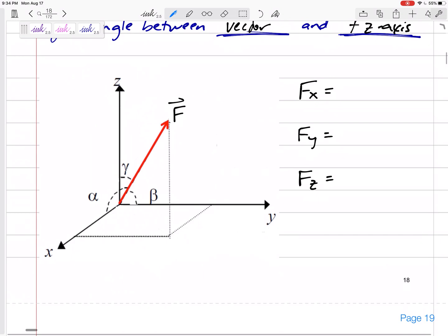So something like this - you see that angle alpha touches the vector and touches the x-axis. This angle beta touches the vector and touches the y-axis. This angle gamma touches the vector, right? It's the angle between the vector and the coordinate axes.